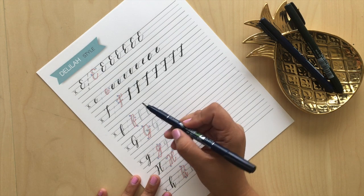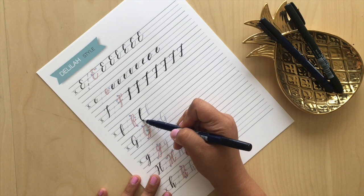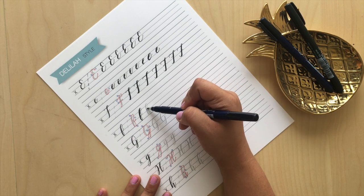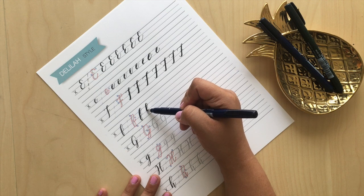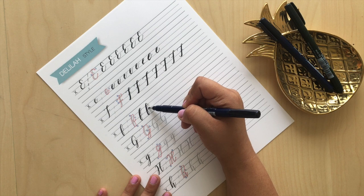Then the lowercase f, it's pretty standard. You bring up the thin stroke, down with a thick, up with a thin, and then finish it off with another thin upstroke.